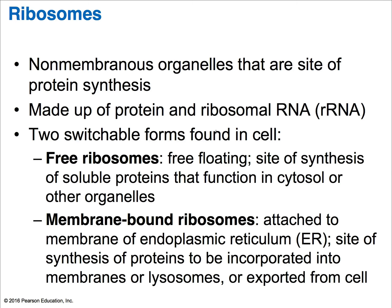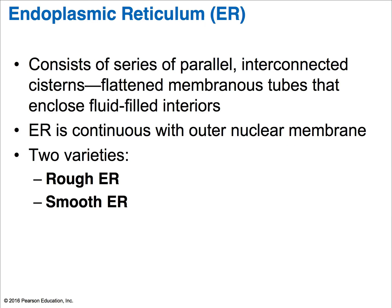Now let's talk about the endoplasmic reticulum. There are two types: the rough ER and the smooth ER. The rough ER has ribosomes attached to it; the smooth ER lacks ribosomes, so naturally their functions are different. When you look at the endoplasmic reticulum, you'll see it's continuous with the outer nuclear membrane of the nucleus. It's made up of a series of parallel interconnected cisterns — flat membranous tubes filled with fluids. On the rough ER, protein synthesis for proteins being exported out of the cell takes place.